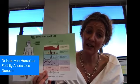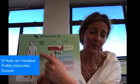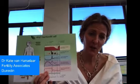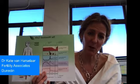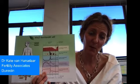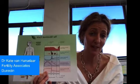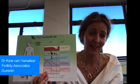GnRH acts on another area of the brain called the pituitary, and the pituitary releases two hormones: follicle-stimulating hormone, FSH, and luteinising hormone, LH.